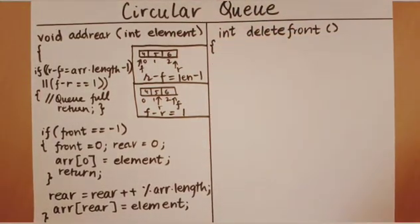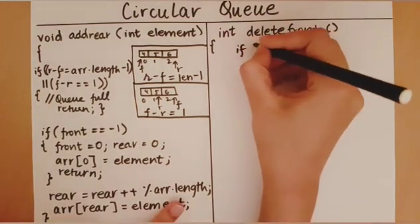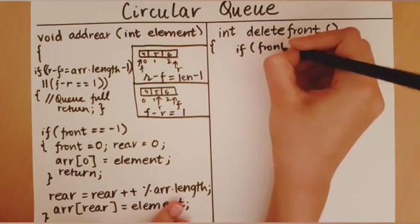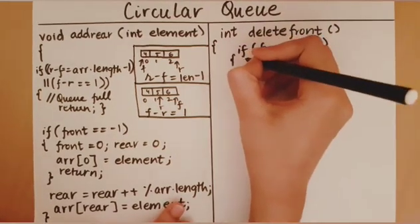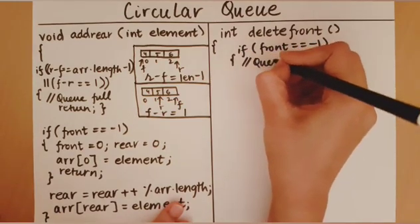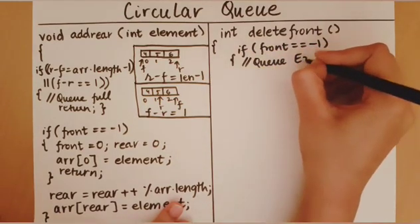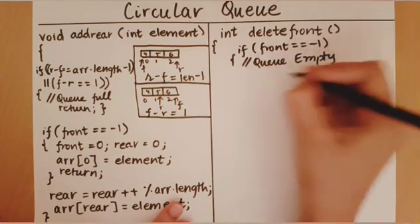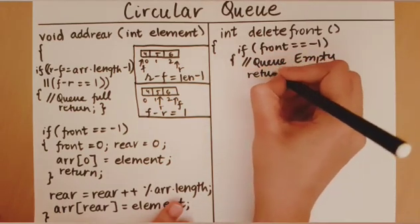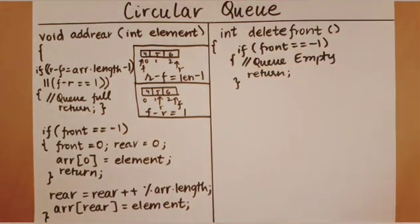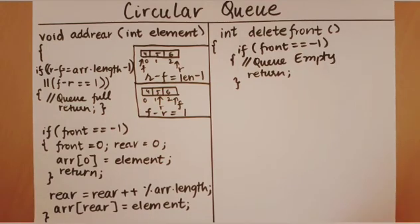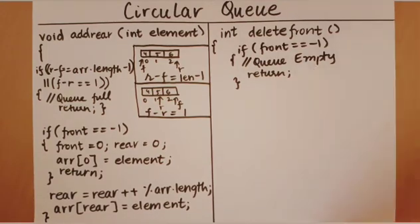The first thing we must check when we delete an element from a queue is whether the queue is empty. When front is equal to minus one, the queue is empty. There is no scope for deleting an element, so we don't want to continue with our program and we return.